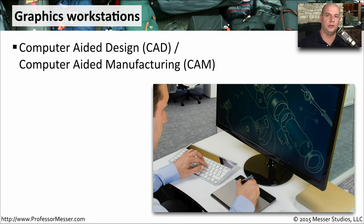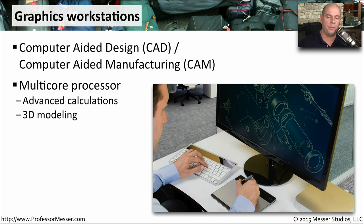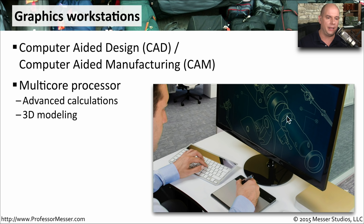Graphics workstations are those used for applications like computer-aided design or computer-aided manufacturing — we sometimes refer to these as CAD-CAM workstations. These devices need a lot of computing power, so they're probably going to have a multi-core processor because you're performing a lot of advanced calculations. Usually you're doing things like 3D modeling, which is going to require a lot of CPU cycles.